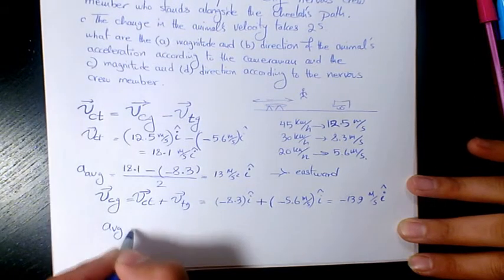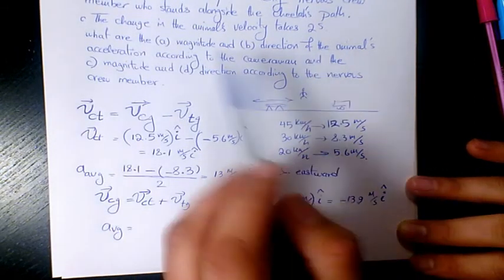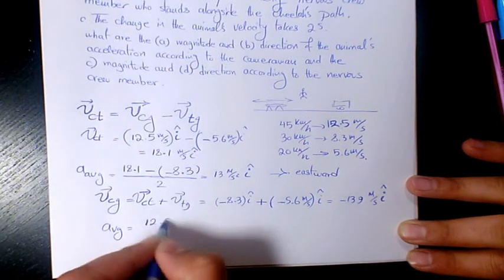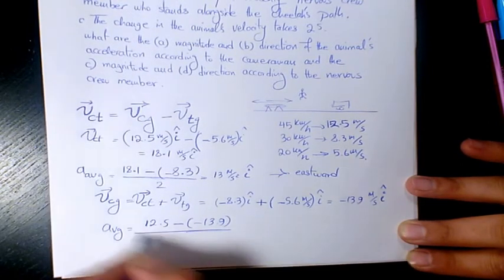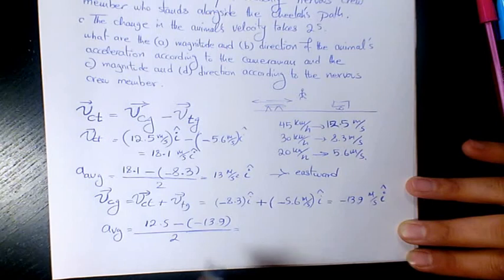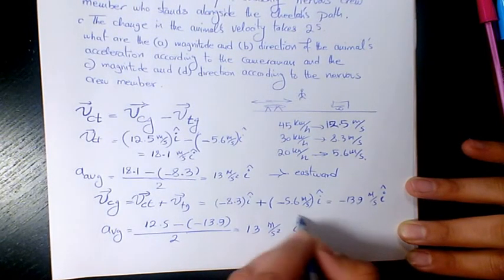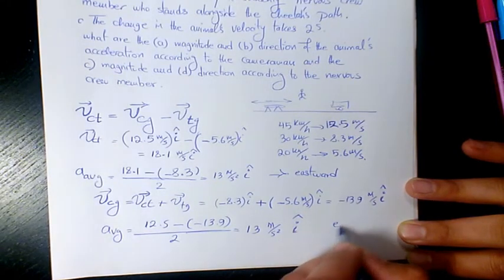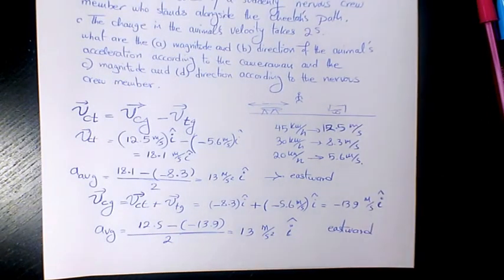The average acceleration equals the final velocity — 45 km/h eastward converted to 12.5 m/s — minus the initial velocity of −13.9 m/s, divided by 2 seconds. That gives 13 m/s² in the î direction, meaning the acceleration is eastward in the second part as well.